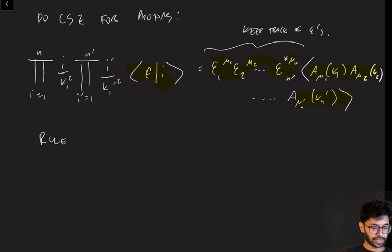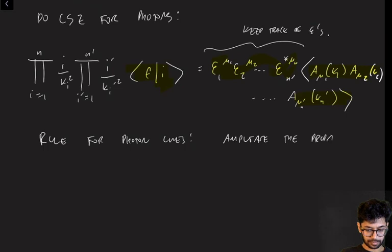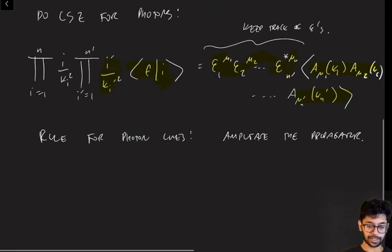And another way to say that is that this basically tells you the rule for external photon lines. So the rule for external photon lines is: you amputate the propagator, and that's because of this factor here, and you take the dot product with the epsilon vector.